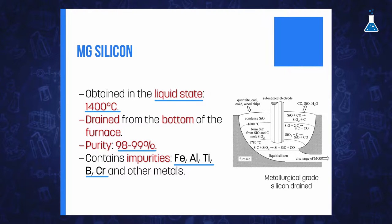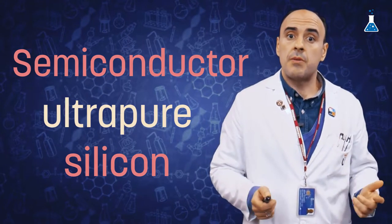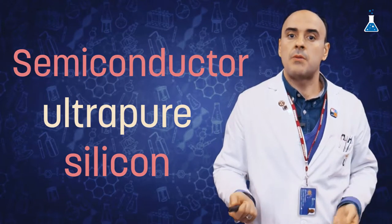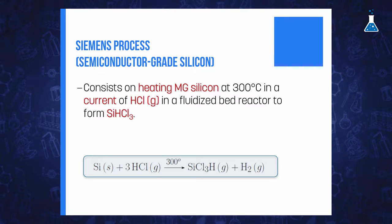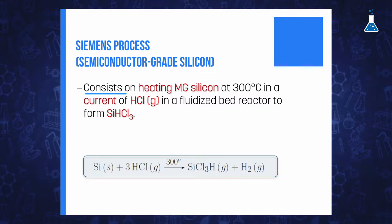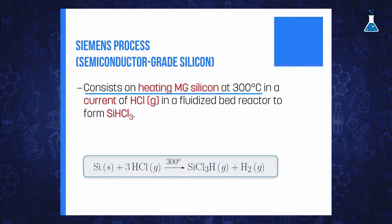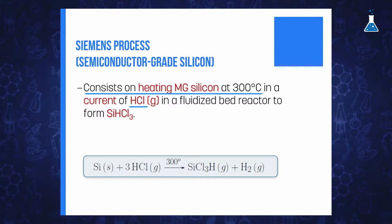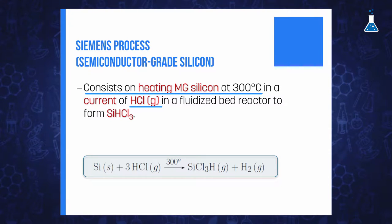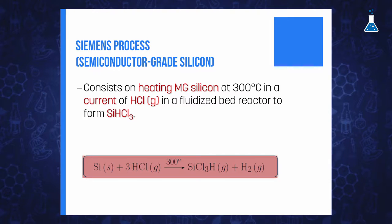For some specific applications, especially in the semiconductor industry, it is necessary to obtain ultra-pure silicon. This means that impurity levels should be below parts per billion levels, and therefore metallurgical grade silicon is not adequate. One of the most common processes to obtain pure silicon is the Siemens process, which consists of heating MG silicon at 300 degrees Celsius in a current of hydrogen chloride gas in a fluidized bed reactor to form trichlorosilane, as shown in the following equation.